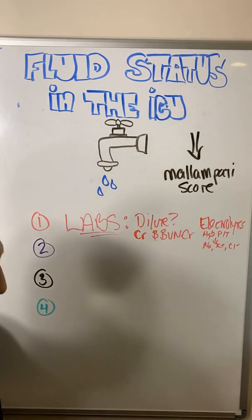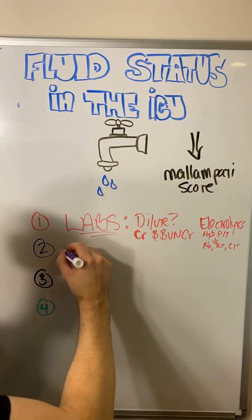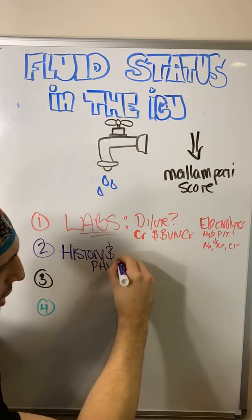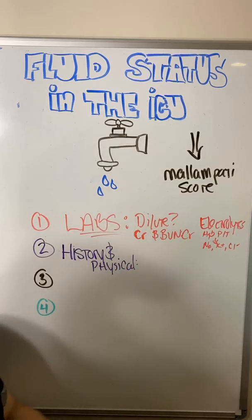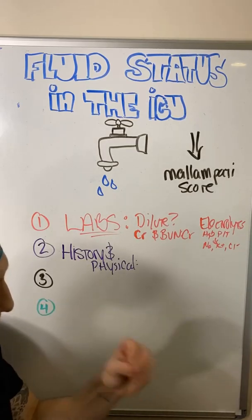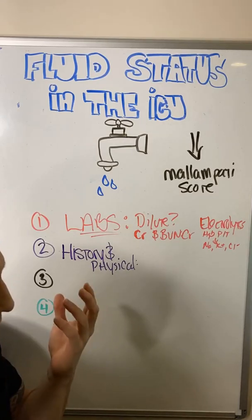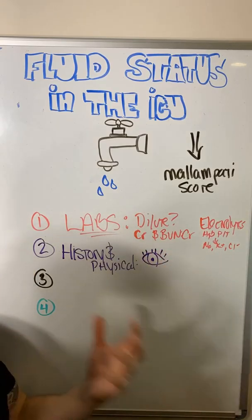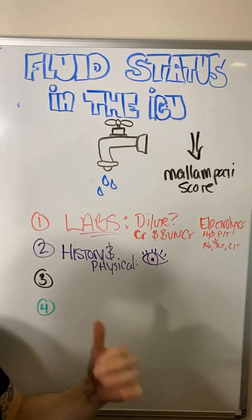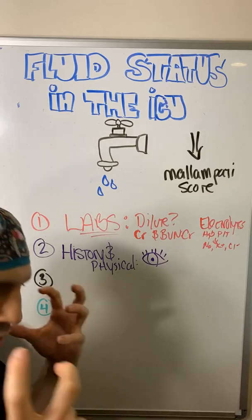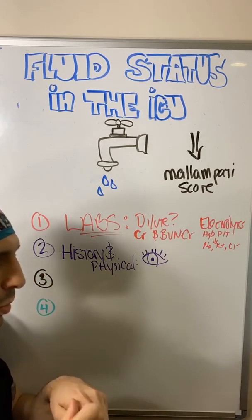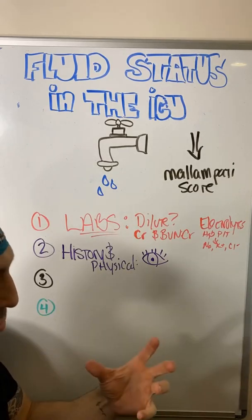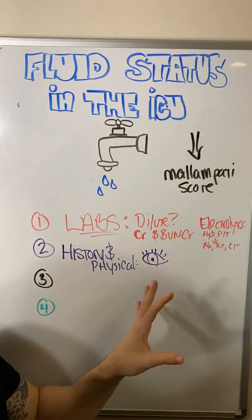The next big thing — and this seemed silly to me in medical school — is the history and physical. In the ICU especially, we start with the eye test: just look at the patient with your eyeballs. Does their tongue look dry? Do their eyes look sunken into their head? What about babies in the NICU — does the fontanelle sink in when dehydrated? Look at mucous membranes. These immediately give you a hint about fluid status, though no single finding gives you the whole answer.